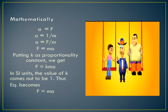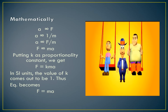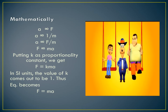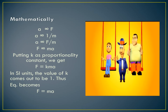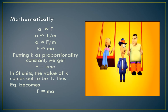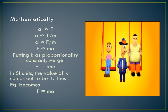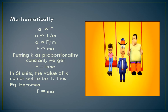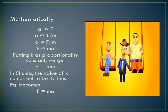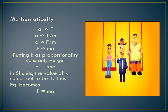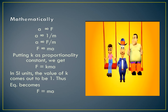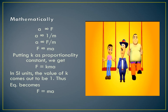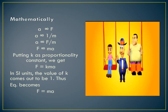Mathematically, acceleration is directly proportional to force and inversely proportional to mass. So acceleration is directly proportional to F divided by M, which gives us F is directly proportional to MA. When we replace the proportionality with equality, a constant of proportionality K is introduced. In SI units, the value of K comes out to be 1, thus the equation becomes F = MA.